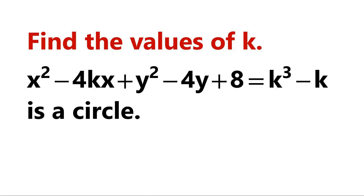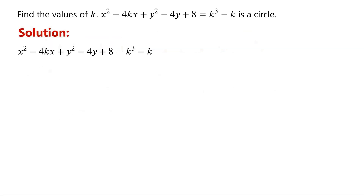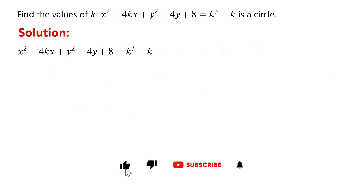Find the values of k, given that the equation x squared minus 4kx plus y squared minus 4y plus 8 equals k cubed minus k is a circle. We are given that this is the equation of a circle.